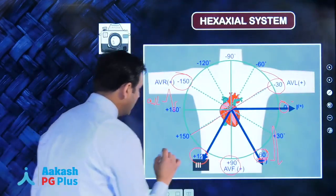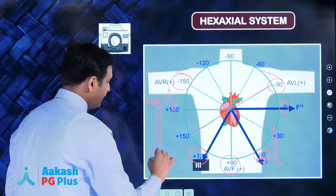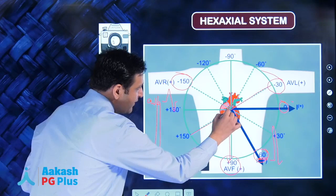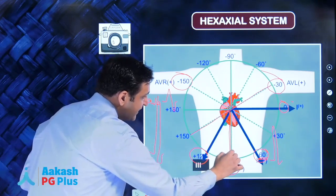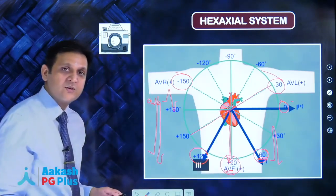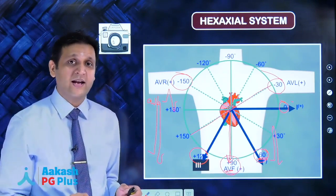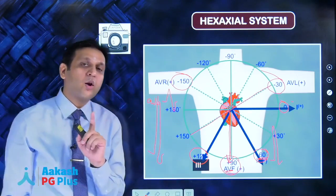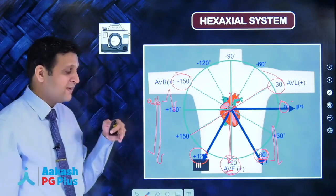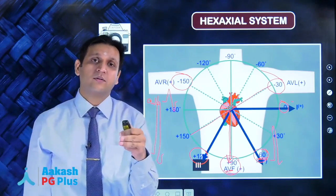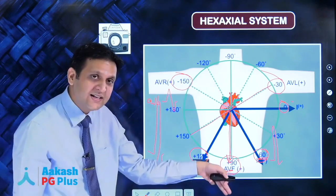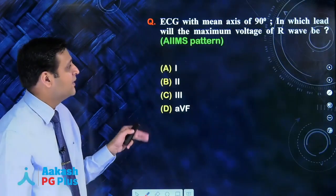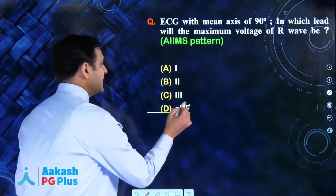If the wave of depolarization is moving at 90 degrees, that's lead AVF. The tallest R wave comes along the lead where the depolarization wave moves. So if depolarization is around 90 degrees, maximum positive R wave will be in lead AVF. The answer is AVF.